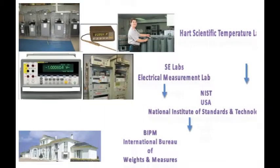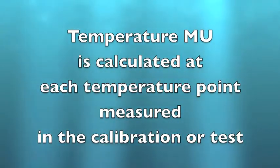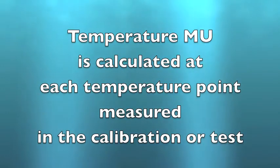The traceability chain goes: baths to Hart Scientific, meter to SC Labs, SC Labs and Hart to NIST, and NIST to BIPM. The temperature measurement uncertainty is calculated at each temperature point measured in the calibration or the test.